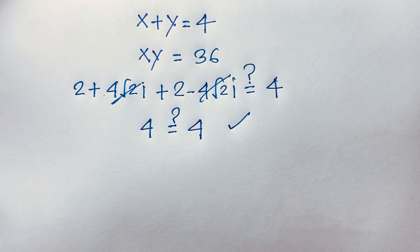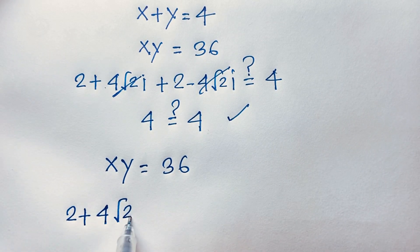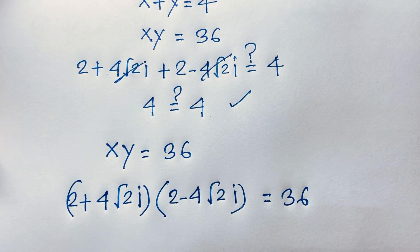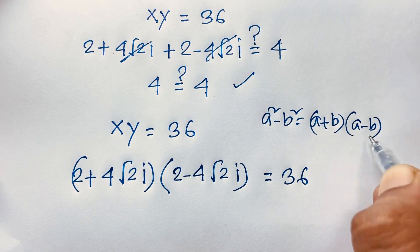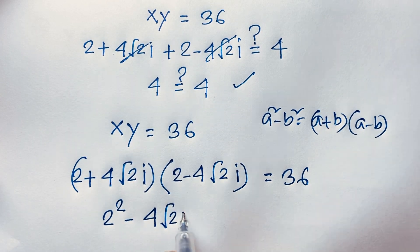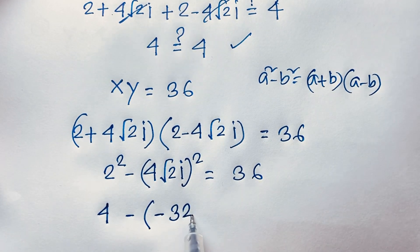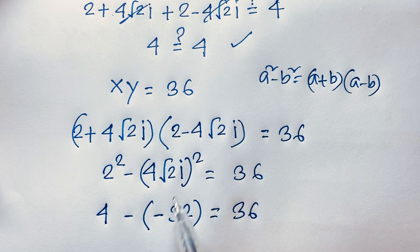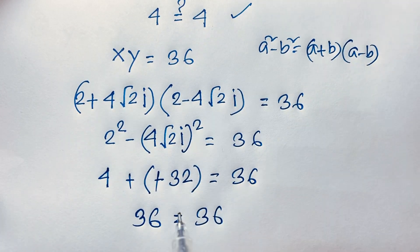Now for xy equals 36: x times y equals (2 plus 4 square root 2 i)(2 minus 4 square root 2 i). Using the identity (a+b)(a-b) equals a squared minus b squared, with a equals 2 and b equals 4 square root 2 i: a squared is 4, and b squared is 4 squared times 2 times i squared, which is 16 times 2 times negative 1, giving negative 32. So 4 minus (negative 32) equals 4 plus 32 equals 36, which equals 36. Left hand side equals right hand side. ✓